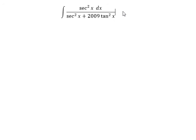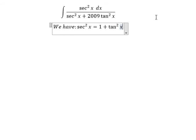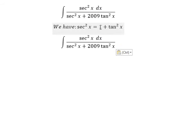I will show you the techniques to answer this question. We have secant of x squared equals one plus tan x squared, so we change this. We have tan x squared plus two thousand and nine times tan x squared.